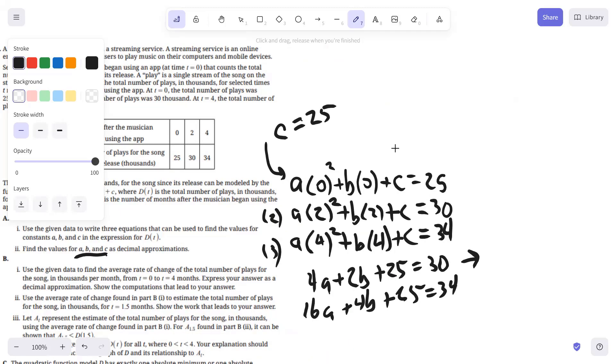So both of these we can solve by subtracting the constant 25 to the right side. So 4A plus 2B equals 5, and 16A plus 4B equals 9. The next thing we're going to do is multiply that first equation by negative 2, and that's going to cancel out our B term. So we would have negative 8A plus 16A is going to give us 8A equals, so there'll be negative 10 plus 9, which is negative 1. So A is going to be negative 1 eighth.